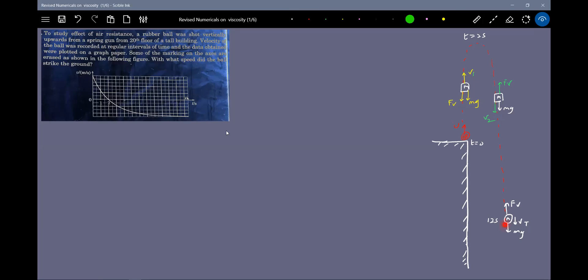After long time it will attain terminal velocity, and it will start descending with constant speed after 12 seconds. The velocity almost remains constant. After this it will move with a constant speed.